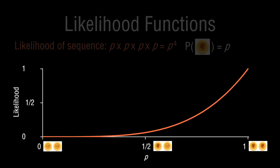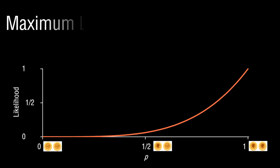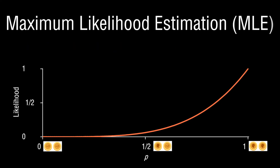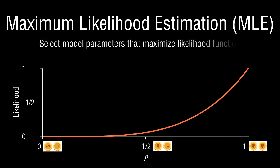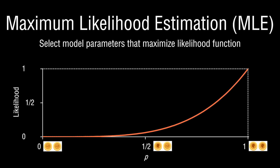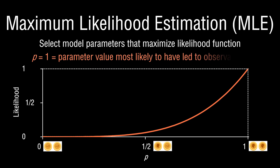Now we can conduct maximum likelihood estimation. According to MLE, what we want to do is select the parameters that maximize this likelihood function. Based on this plot, if p equals one — we're flipping a coin that is heads on both sides — that maximizes the likelihood function. Through this problem you have been able to implement a challenging mathematical concept: creating a likelihood function and determining the parameters that maximize it.